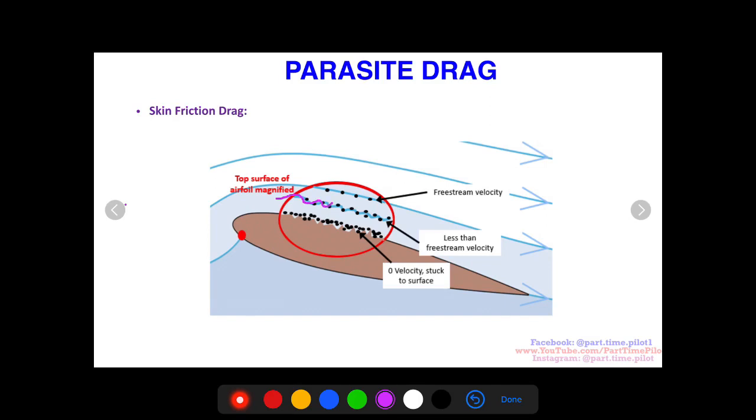As you get far enough away, outside the boundary layer, you're going to have just freestream where these air molecules are in a single file line just flowing past unaffected. This impedance very close to the surface of the skin of the aircraft is skin friction drag.